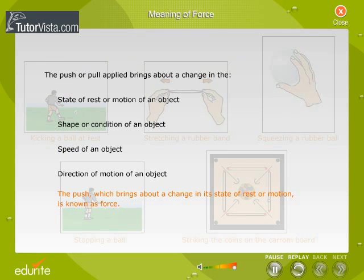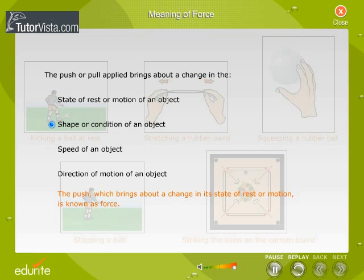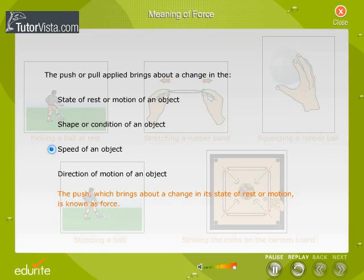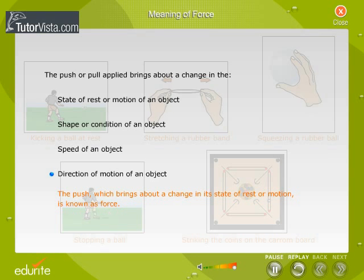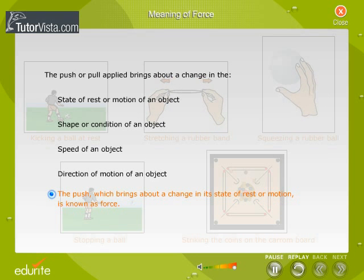The push or pull applied brings about a change in the state of rest or motion of an object, shape or condition of an object, speed of an object, and direction of motion of an object. This push which brings about a change in its state of rest or motion is known as force.